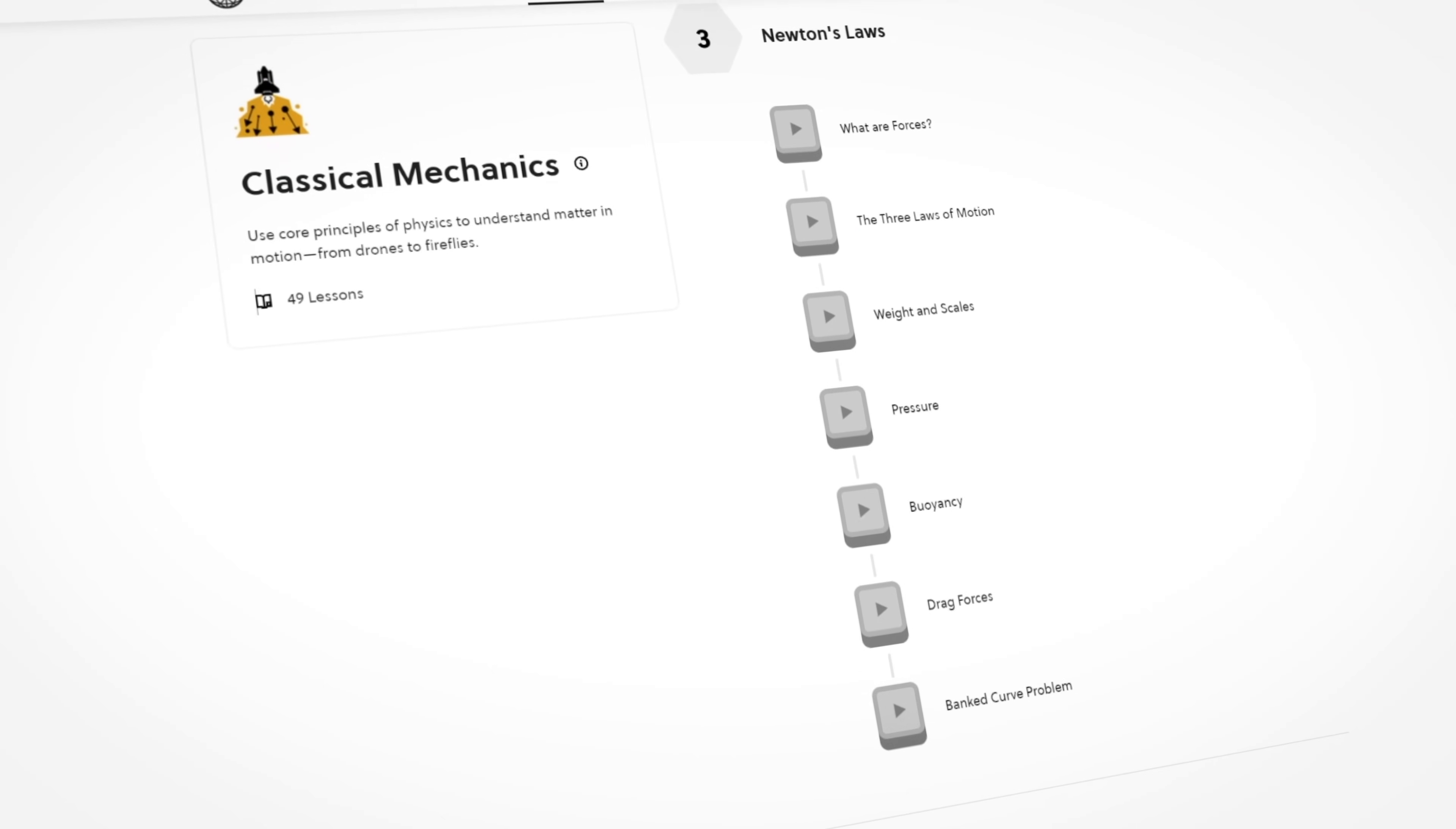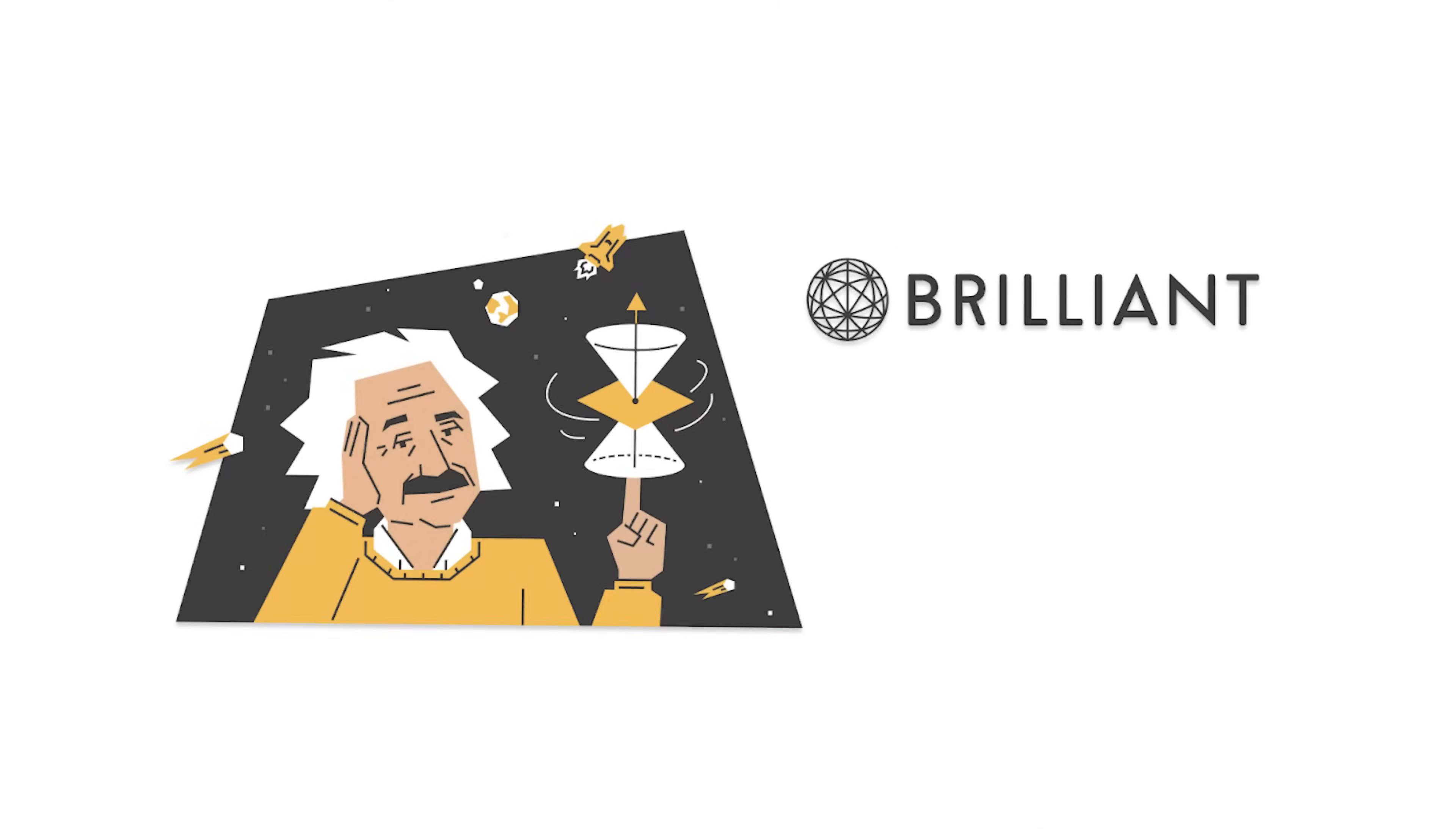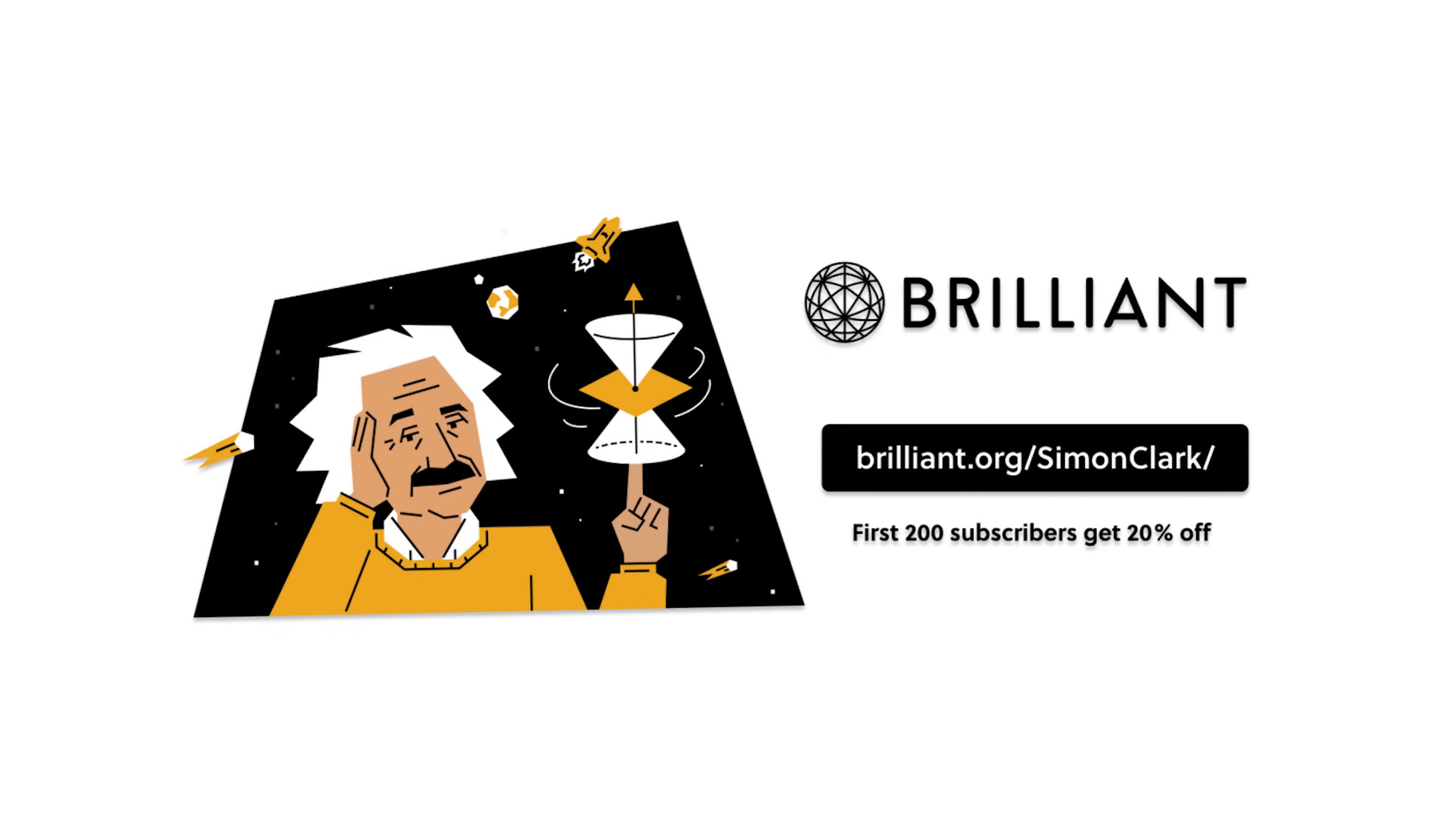And wouldn't you know it, they have lessons on Newton's laws as part of their course on classical mechanics. In bite-sized chunks of 15 minutes a day, you can support your learning in the classroom or be introduced to cool new concepts like relativity. To get started learning about the world around you, free for a full 30 days, visit brilliant.org slash Simon Clark or click the link in the description. And the first 200 of you to do so will also get 20% off Brilliant's annual premium subscription. That's brilliant.org slash Simon Clark.